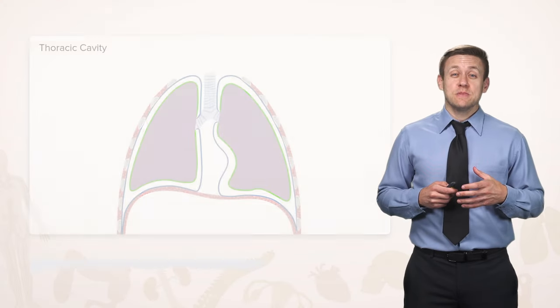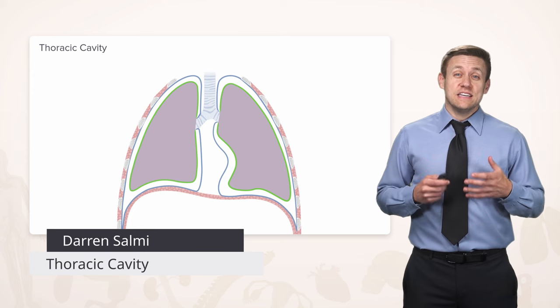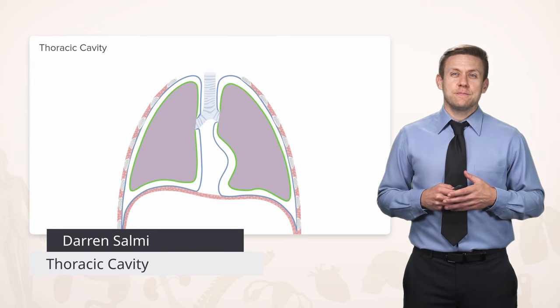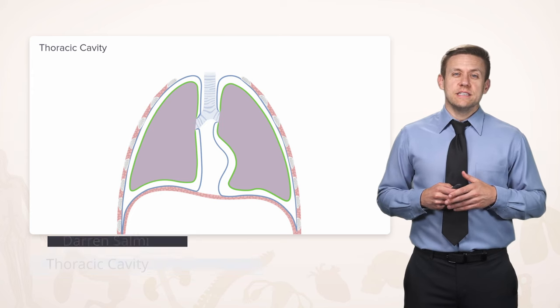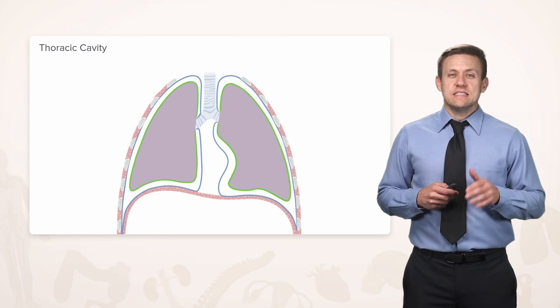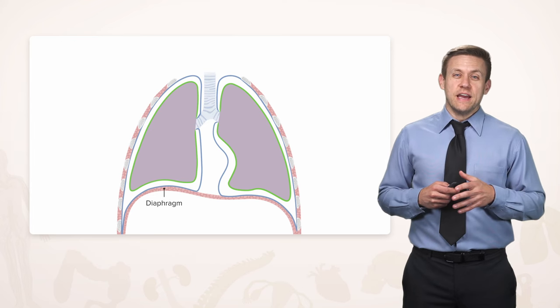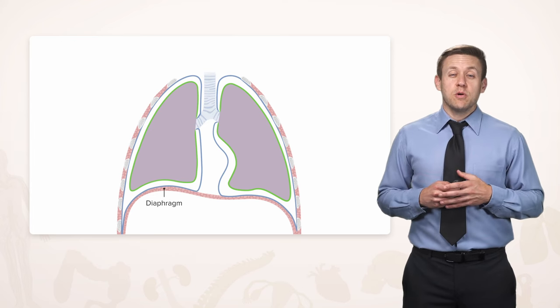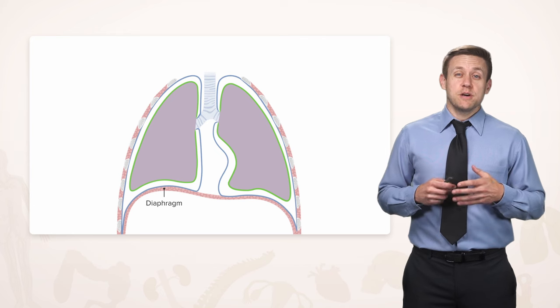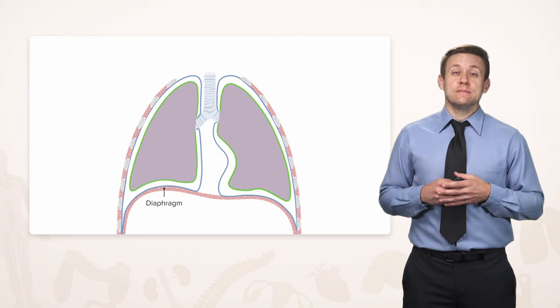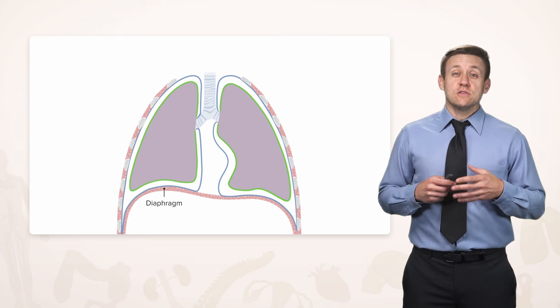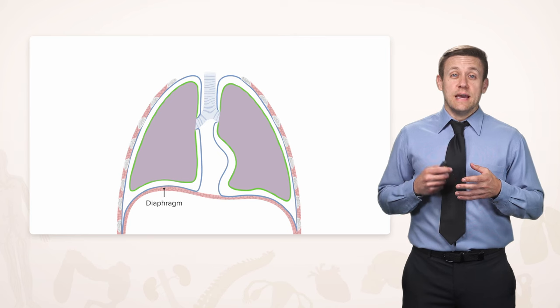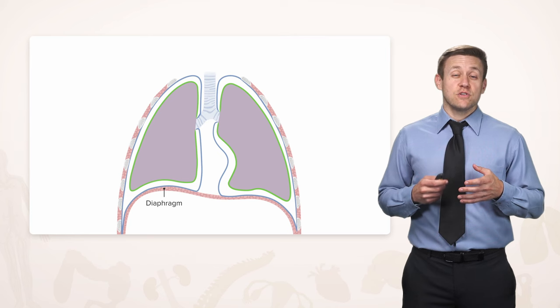Now that we've seen the bones and muscles that surround the thoracic cavity, let's look at the thoracic cavity itself. The first thing we'll notice is the diaphragm at the inferior edge. The diaphragm is pretty important because it's the primary muscle of inhalation, and it also separates the thoracic and abdominal cavities from each other.